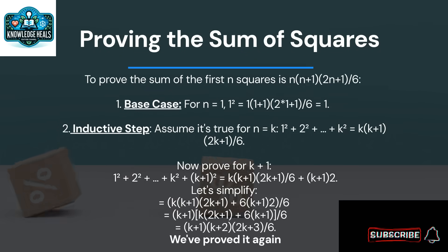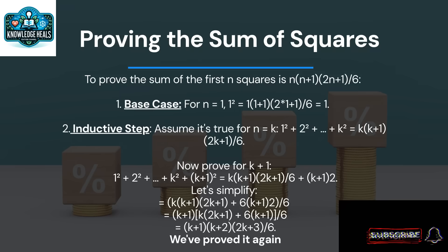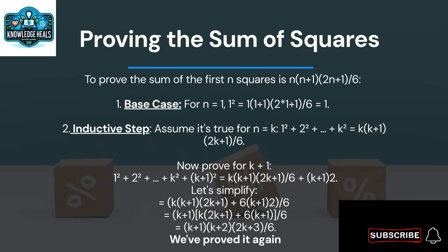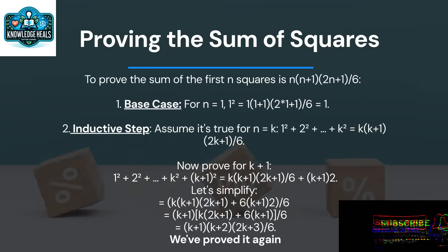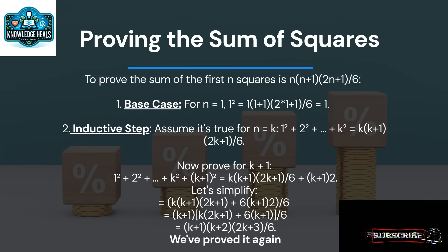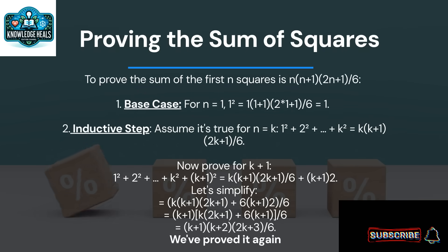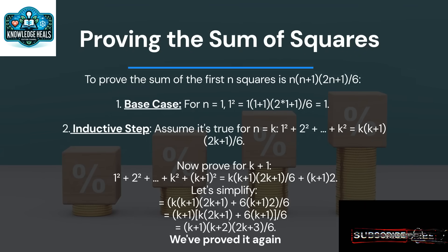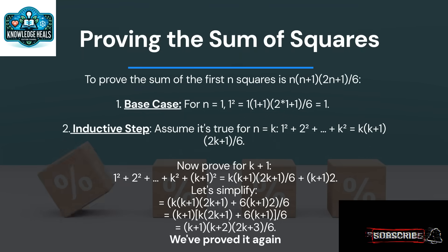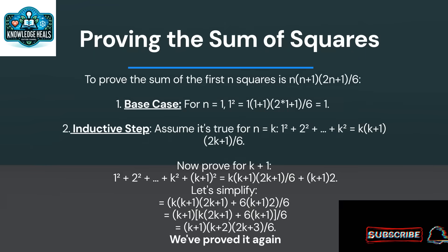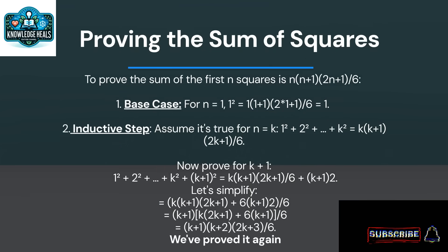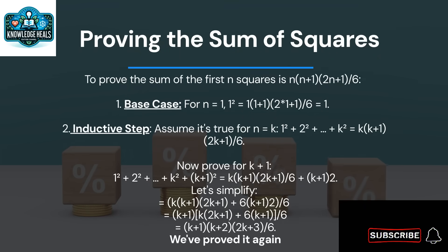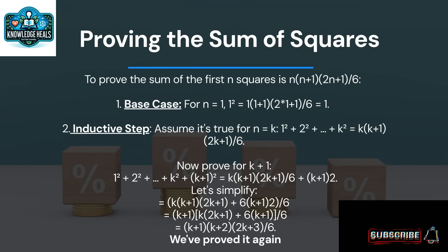Base case: for n equal to one, 1² = 1×(1+1)×(2×1+1)/6, which equals one. Inductive step: assume it's true for n equal to k, so 1² + 2² + ... + k² = k(k+1)(2k+1)/6. Now prove for k+1: 1² + 2² + ... + k² + (k+1)² = k(k+1)(2k+1)/6 + (k+1)². Let's simplify: [k(k+1)(2k+1) + 6(k+1)²]/6 = (k+1)[k(2k+1) + 6(k+1)]/6 = (k+1)(k+2)(2k+3)/6. We've proved it again.